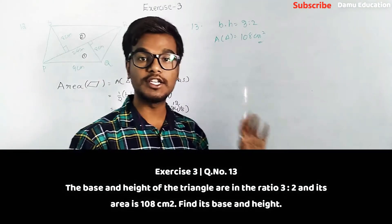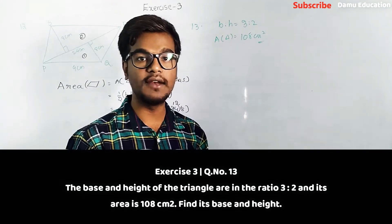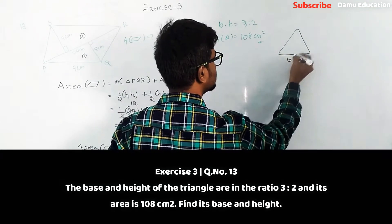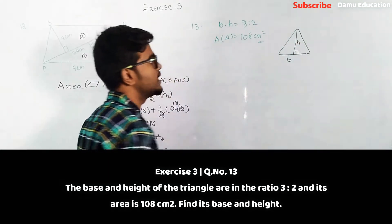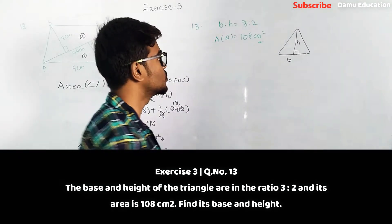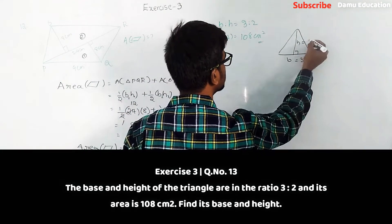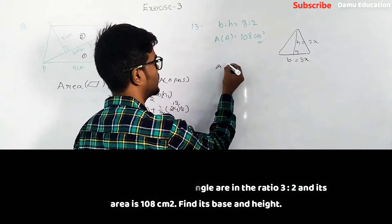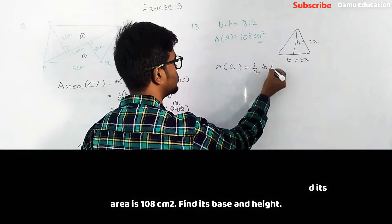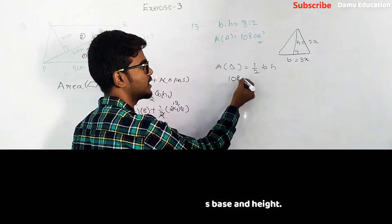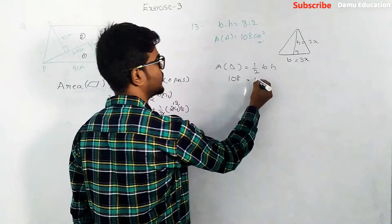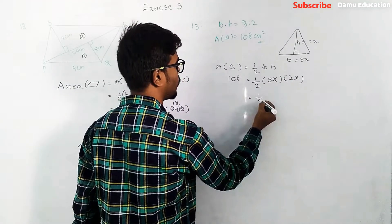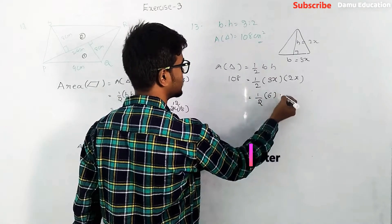Question 13: In a given triangle, the base and height are in the ratio 3:2 and the area of the triangle is 108 centimeters square. We need to find the base and height. Let base = 3x and height = 2x centimeters. Area of triangle = ½ × base × height, so ½ × 3x × 2x = 108.